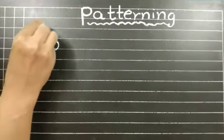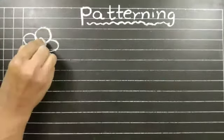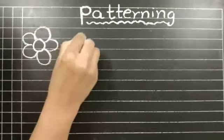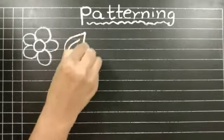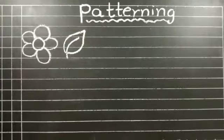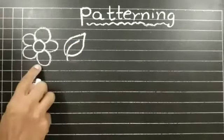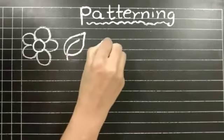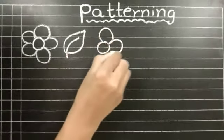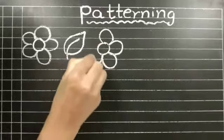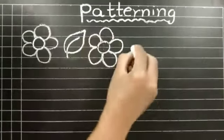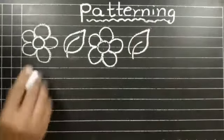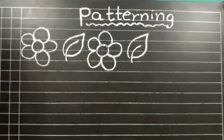What is this children? Yes, this is a flower. And what is this? This is a leaf. Flower, leaf. Then, flower, leaf. This is our basic pattern.